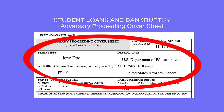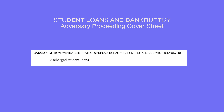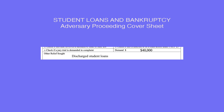Remember, you are the plaintiff and the creditors are the defendants. In the space that says Defendants, put U.S. Department of Education, et al. The et al. is a way of saying there are more defendants without having to write every defendant's name. The attorney for the defendants will always be the United States Attorney General. In the box that states Cause of Action, put 'To Discharge Student Loans.' Where the line says Demand, put the total amount of student loans you have. Where it says Relief Sought, put 'To Discharge Student Loans.'